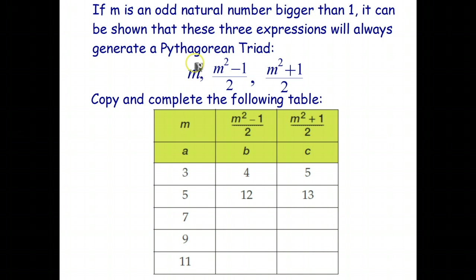So when m is equal to 3, we get 3 there. 3 squared is 9, minus 1 is 8, 8 divided by 2 is 4. So that gives us the value of 4 for the second number. And 3 squared is 9, plus 1 is 10, 10 divided by 2 is 5. And that gives us the Pythagorean triad 3, 4, 5.